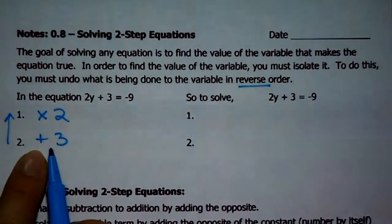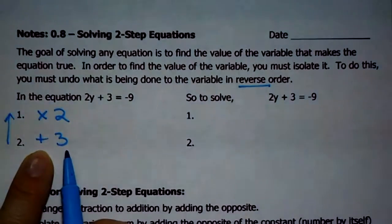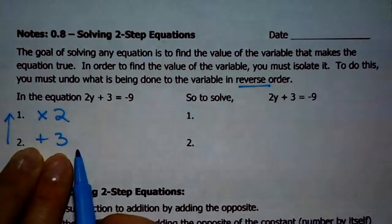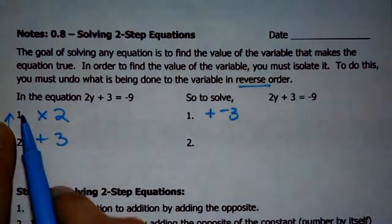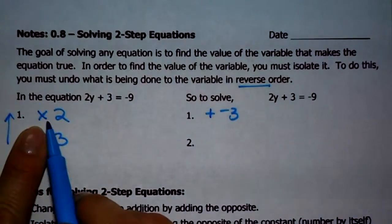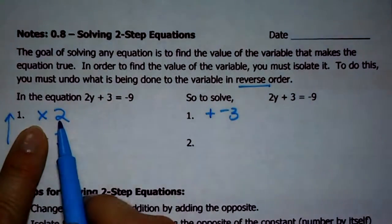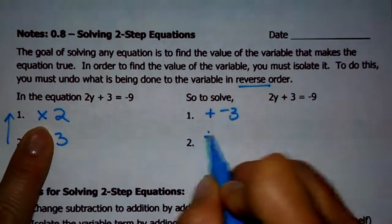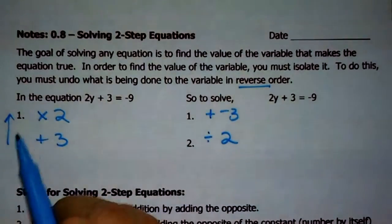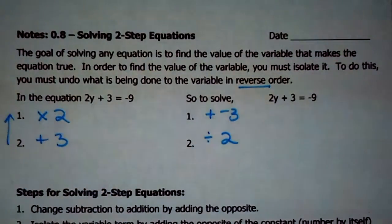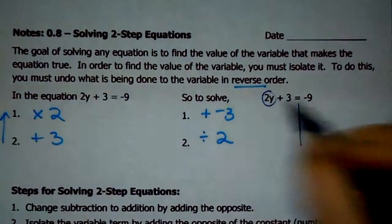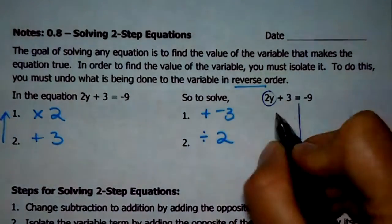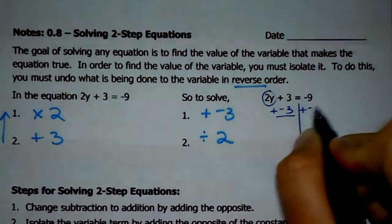Do you remember how to get rid of a 3 that was being added to a variable? According to our one-steps, to get rid of a number that's being added, you just add the opposite of it. And now I want to do what happens first, last — because it's reversed order — to get rid of multiplying the variable by 2. We didn't change any signs; all we did to undo multiplication was divide by that. So in this two-step equation, the first thing I would want to do is get this 2y by itself — get rid of this 3 that was being added. All we need to do is add a negative 3, and that's how to undo that step.